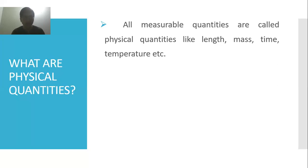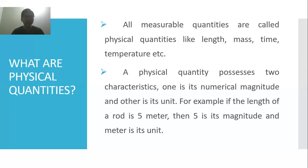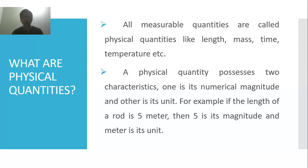A physical quantity possesses two characteristics: one is its numerical magnitude and the other is its unit. For example, if the length of a rod is five meters, then five is its magnitude and meter is its unit. Whenever you talk about a physical quantity, you will always talk about its magnitude and its unit.